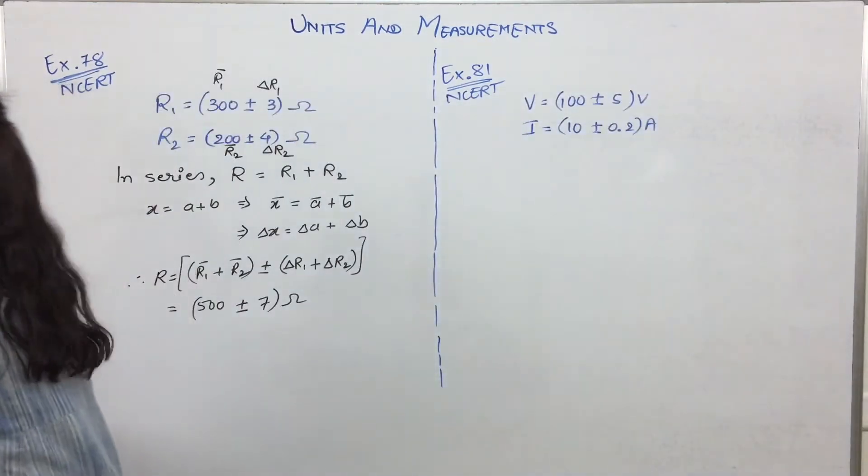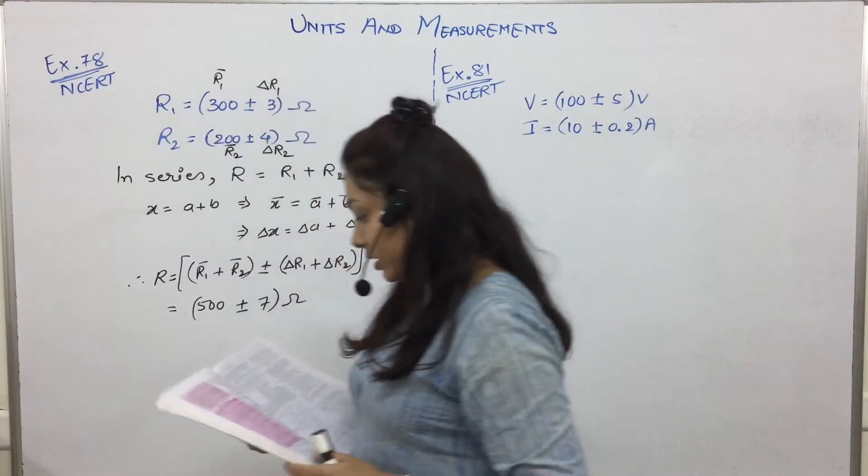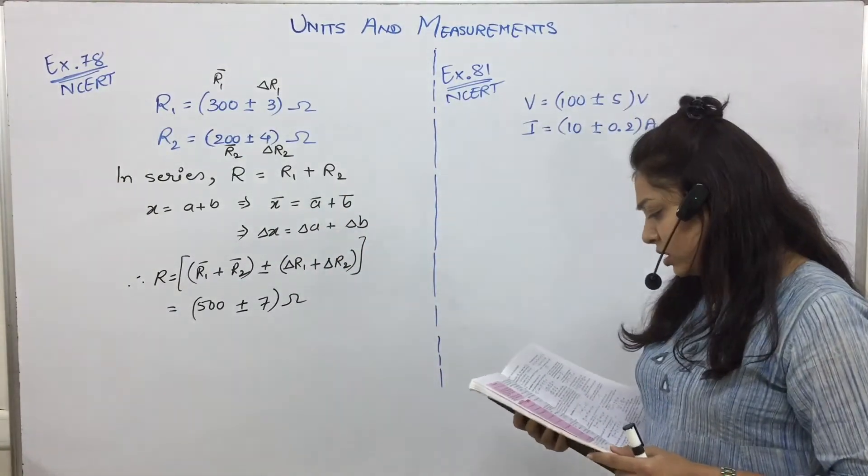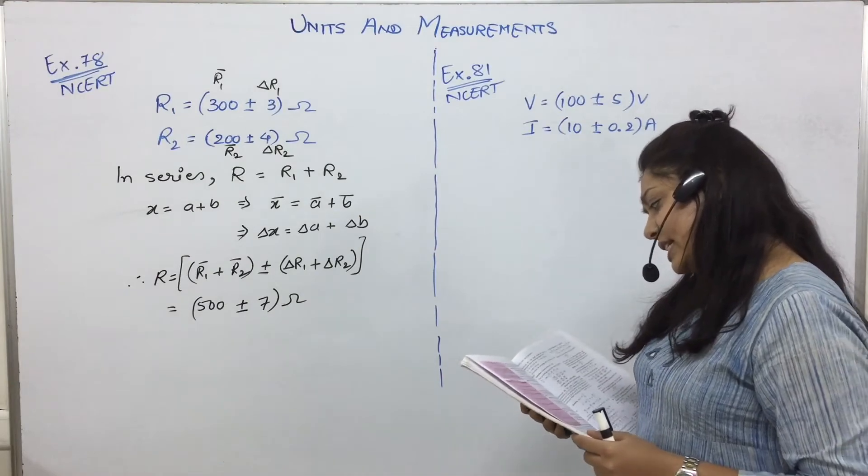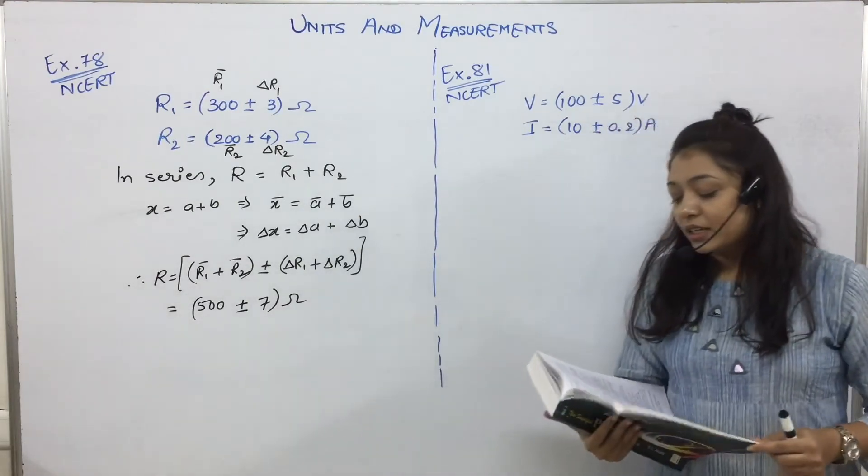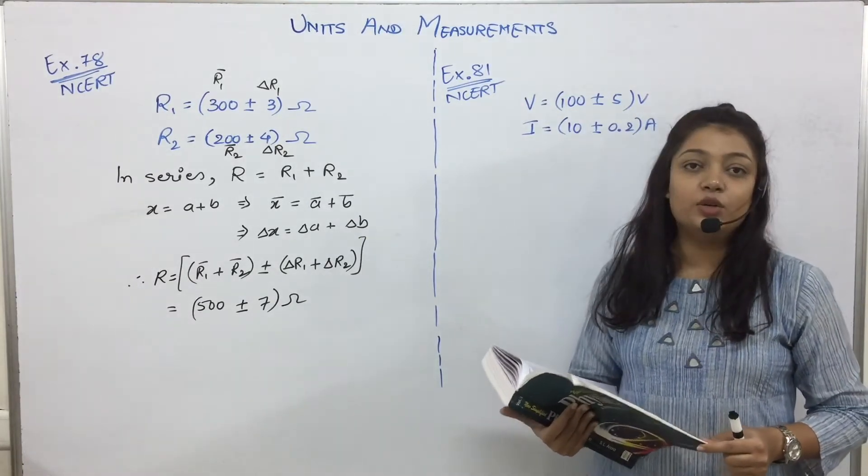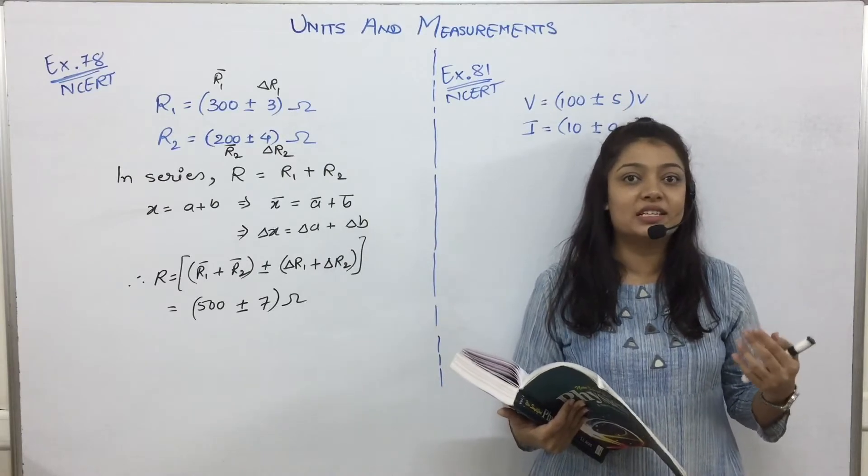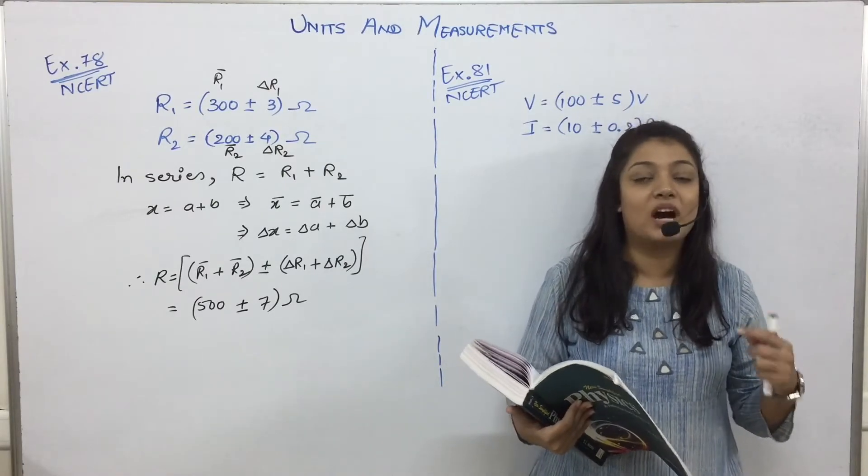Okay, so next question, question number 81, example number 81, which is again one of the solved NCERT textbook questions. The question reads, the resistance R is equal to V by I, or voltage V is equal to I current into R resistance.